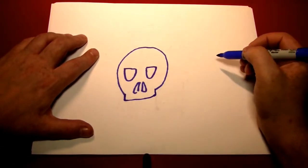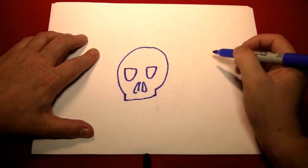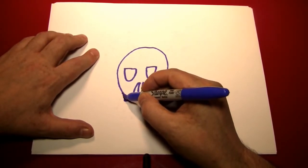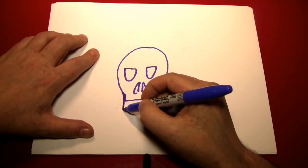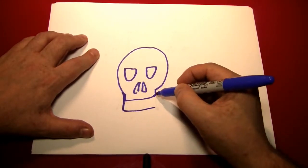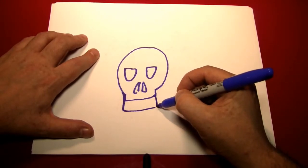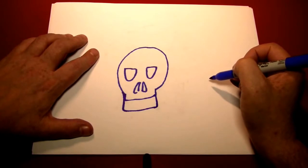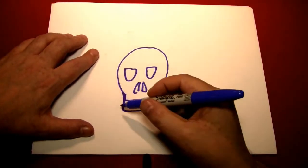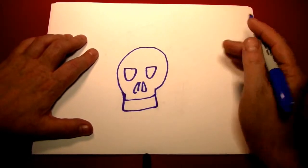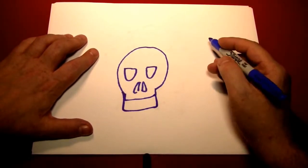Then we're going to create the bottom jaw by starting around the same place, but just coming down further before going across. Do it the same on both sides, and we're on our way. This guy seems to have a rather lantern-esque jaw. I wonder what your skull is looking like.